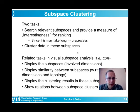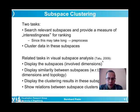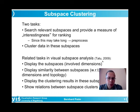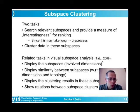For visual analysis of subspace clusters, one must display the subspaces — the involved dimensions — and show similarity between subspaces in terms of dimensions and topology. Clustering results in these subspaces must be shown, along with relations between subspace clusters: overlapping objects and overlapping dimensions. Subspace clusters may also be completely disjunct.